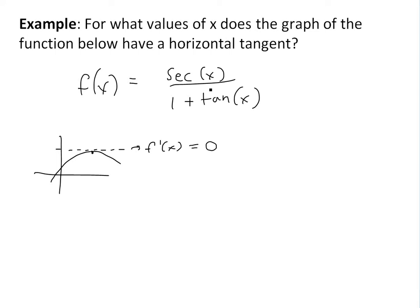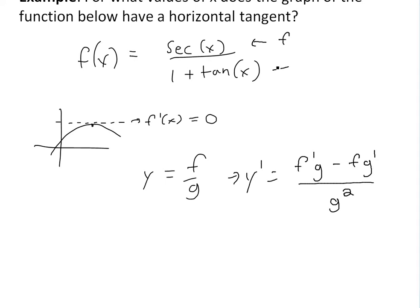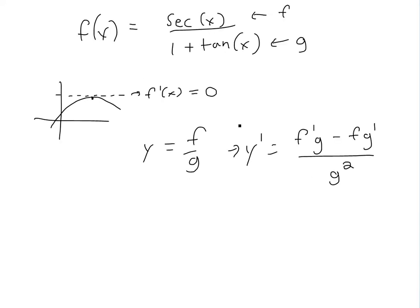This is a pretty complicated one, but we can apply the quotient rule — see my video links below for the proof. Basically, for a derivative, if we have y equals f divided by g, a function divided by another function, then the derivative is y prime equals f prime times g minus f times g prime, all divided by g squared. So we can apply that here. We'll call the top function f and the bottom function, 1 plus tan x, we'll call g.